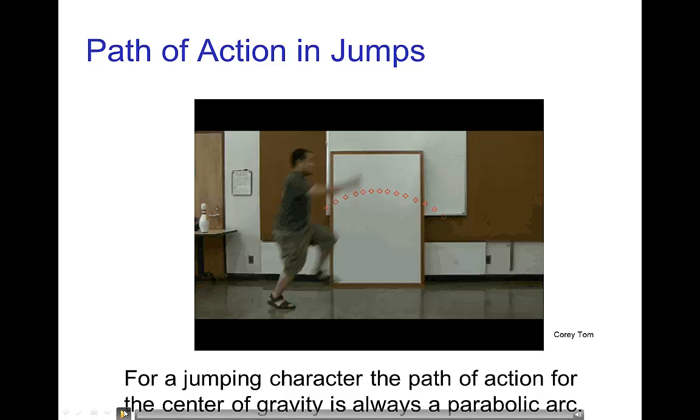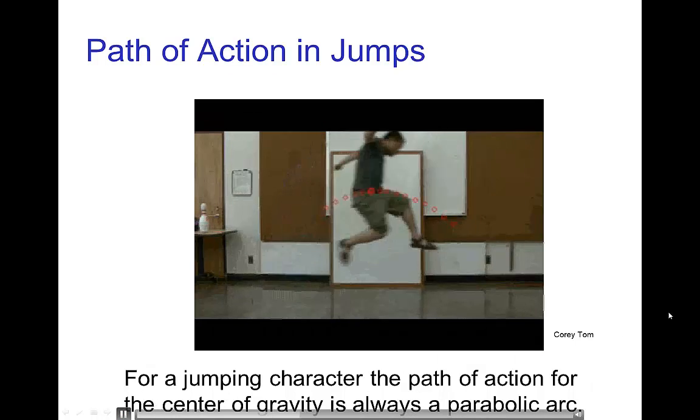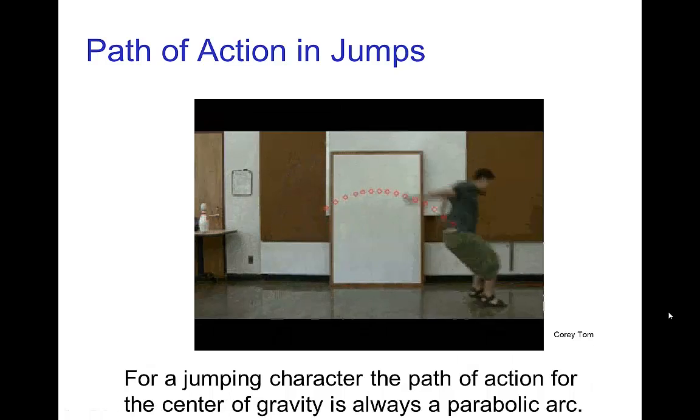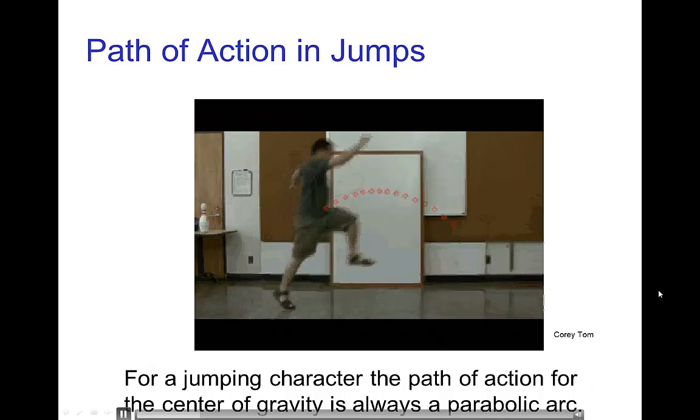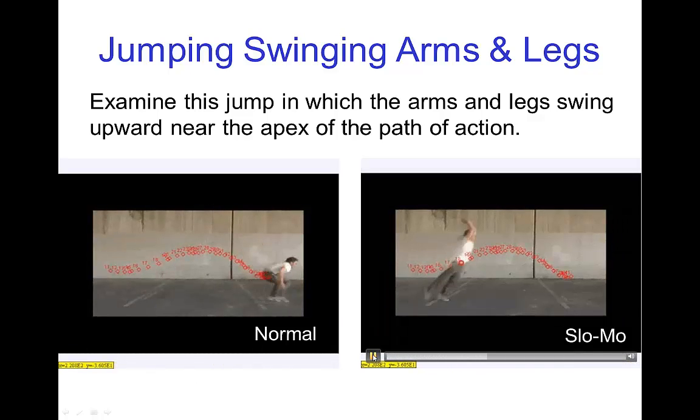For a character jumping, it's very much the same parabolic path of action if we can track the center of gravity. Here is another example of a person jumping and tracking their position. Let's see that in slow motion.